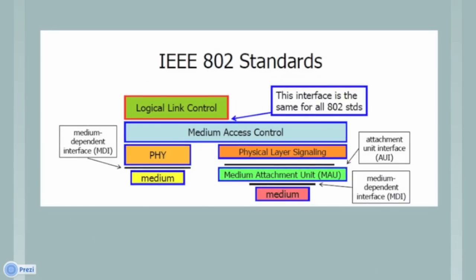The figure in front of you gives a detailed description of where and why the standards are required. All 802 standards provide a common upper interface to LLC. A MAC protocol may be specified for use with different physical media. For example, 802.3 supports thick coaxial cable, thin coaxial cable, and twisted pair, etc.